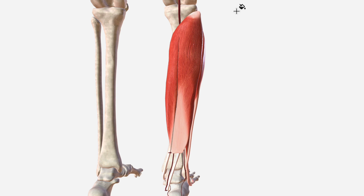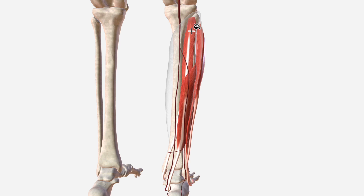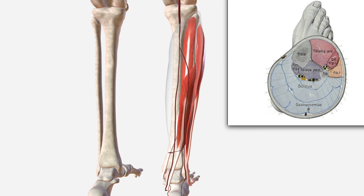Let's make the soleus transparent so that we can see the path of the fibular artery. We know that it's related closely to the lateral and posterior compartments. Let's have a look at this image — a coronal cut of the leg. Here is the fibular artery and here is the posterior tibial artery. In our model, this is the fibula and this is the posterior tibial.